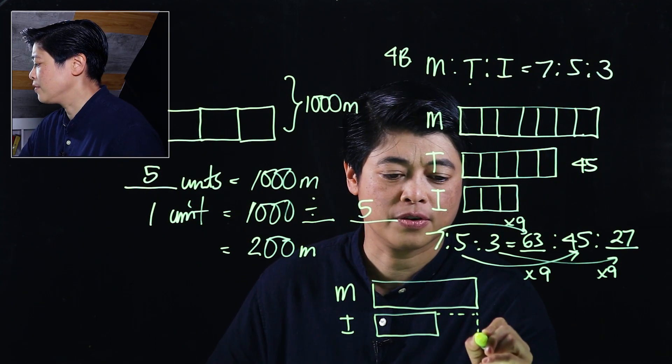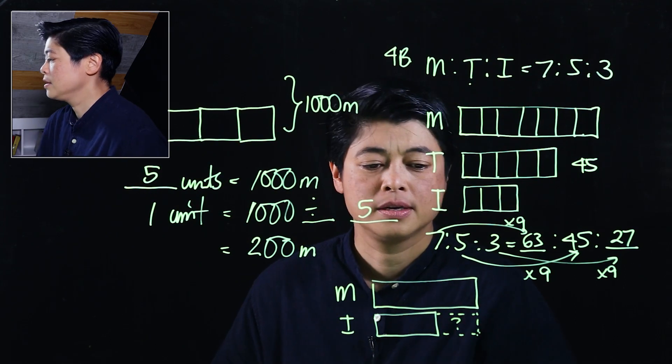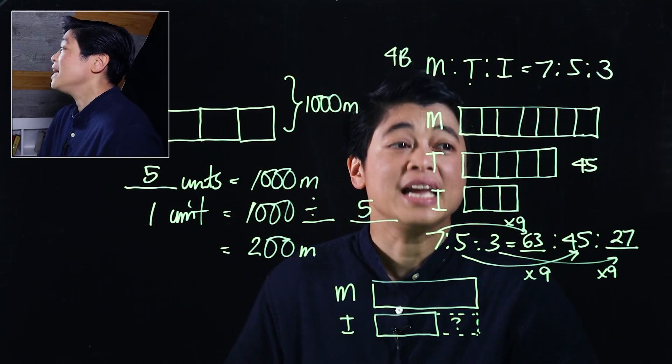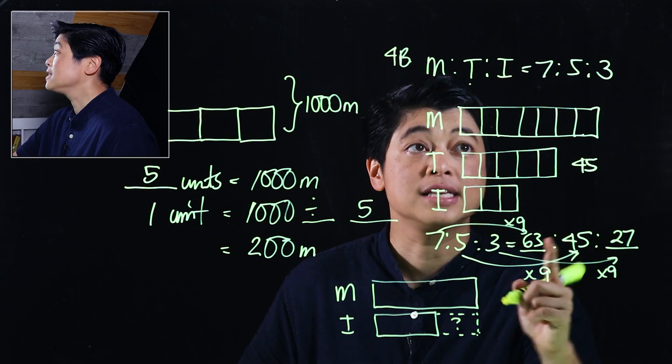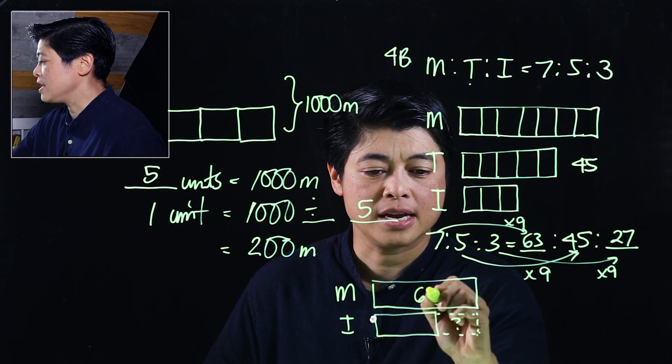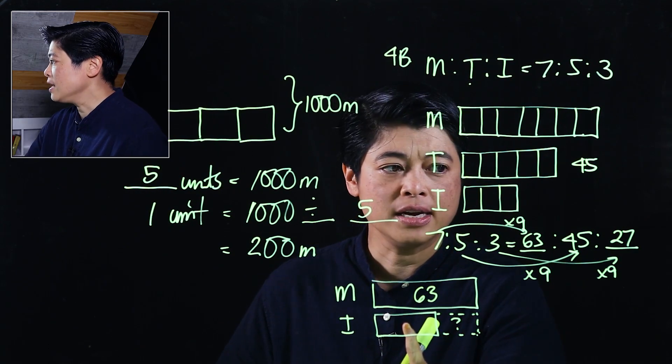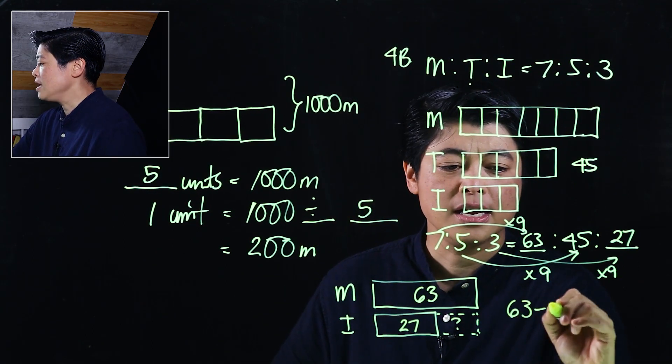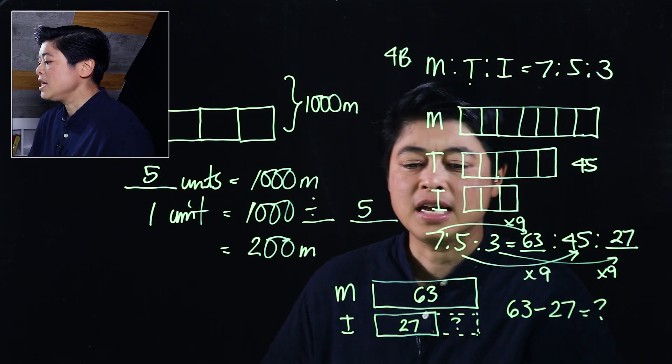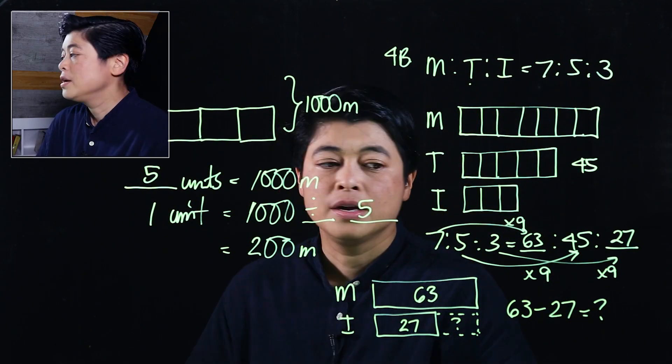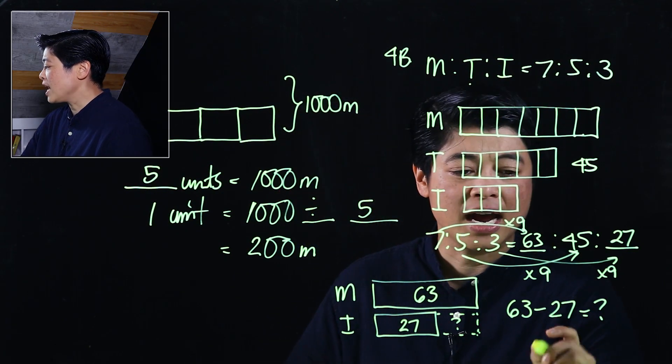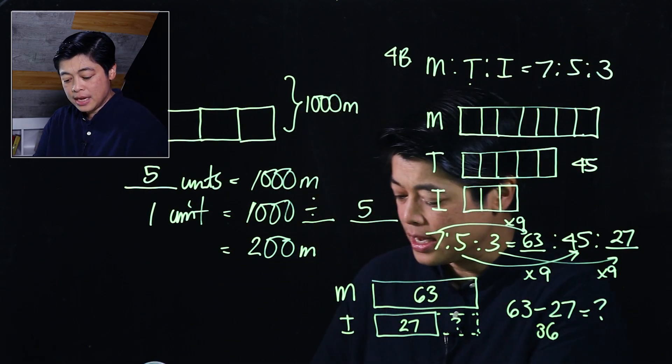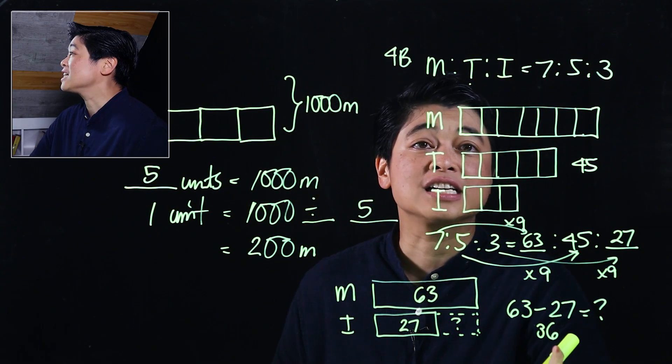This is what we're looking for: how many more did he have of Malaysia than Indonesia. So Malaysia is 63, Indonesia is 27, so the equation would have been 63 minus 27 equals question mark, which means if you subtract that should give you 36. Meaning he had 36 more Malaysian stamps than Indonesian stamps.